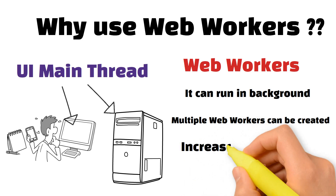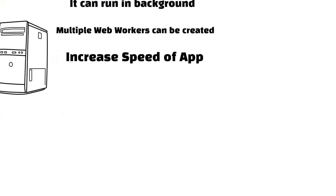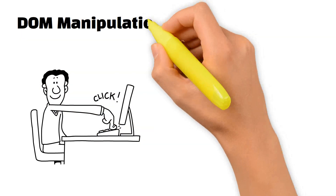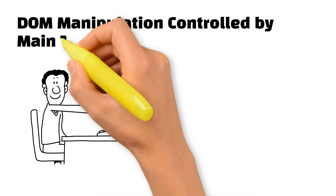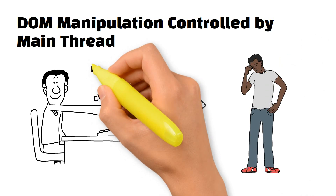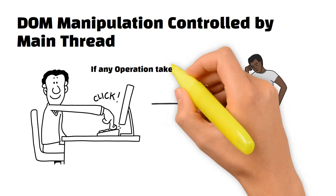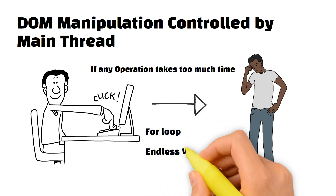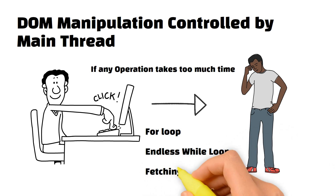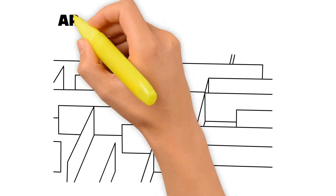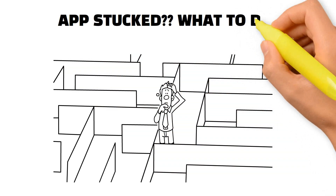You can create multiple web workers at one time to speed up the application and increase its overall utility. The main UI thread is responsible for all DOM manipulation — pressing buttons, inputting into input fields. So whenever a big operation is happening, like fetching data from a database, executing a big for loop, or an endless while loop, the user gets stuck and the app freezes, which is not acceptable.